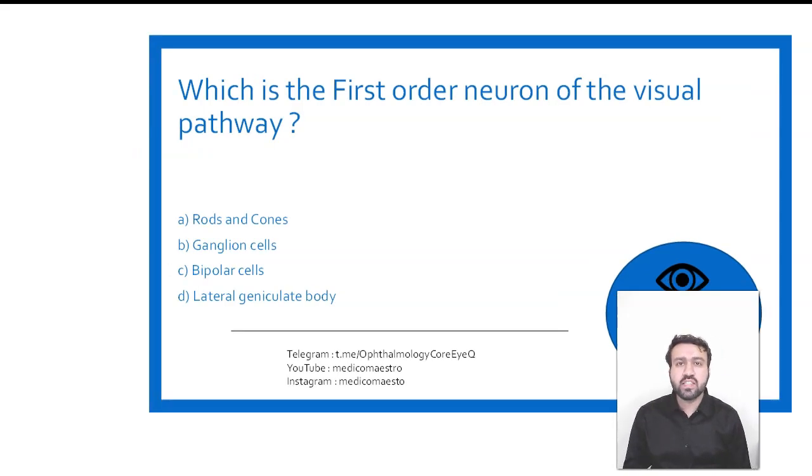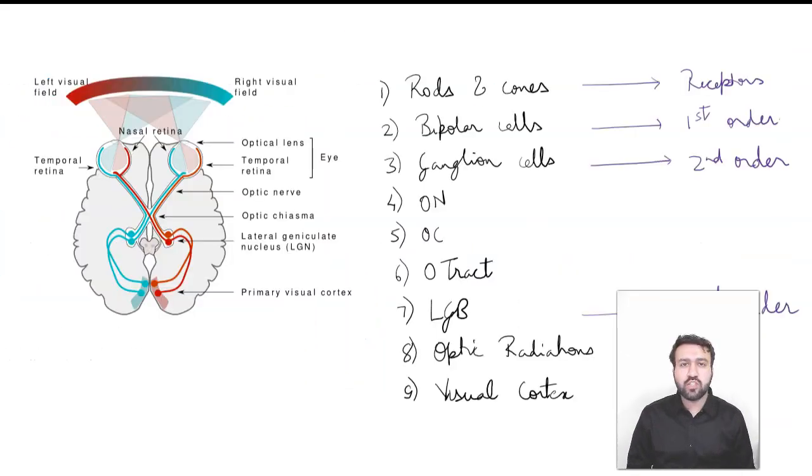So before we discuss the answers to these questions, let's quickly look at the visual pathway. As you guys know that the receptors for the visual pathway are the rods and cones. The rods and cones relay into the bipolar cells. The bipolar cells in turn send signals to the ganglion cells and the axons of the ganglion cells comprise the optic nerve. The optic nerve crosses over at the chiasm and then continues as the optic tract. And finally the lateral geniculate body sends off optic radiations to the visual cortex.